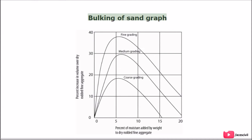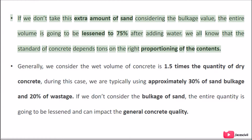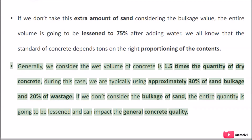Bulking of sand graph: If we don't take this extra amount of sand considering the bulkage value, the entire volume will be lessened to 75% after adding water. The standard of concrete depends greatly on the correct proportioning of its contents. Generally, we consider the wet volume of concrete to be 1.5 times the quantity of dry concrete. In this case, we typically use approximately 30% sand bulkage and 20% wastage. If we don't consider the bulkage of sand, the entire quantity will be lessened and will impact the general concrete quality.